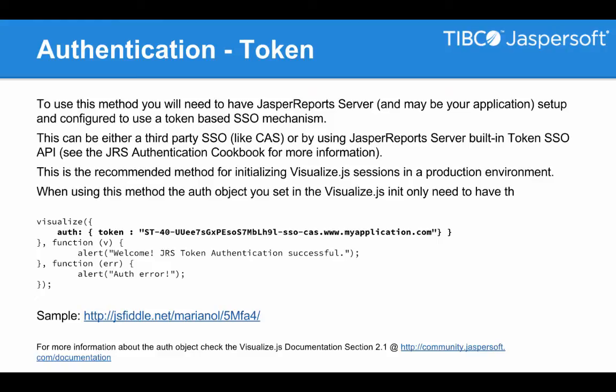Now let's look a little deeper into the token authentication method. In this method, as discussed, you will be using a single sign-on mechanism — either a third-party SSO or the Jasper Report Server built-in token SSO API. I would recommend checking the Jasper Report Server Authentication Cookbook in our documentation, which covers all the methods for third-party and internal APIs for authentication. This is the recommended method for embedding the library in a production environment. It's very secure and you are not exposing user credentials inside your code or during any calls made to the server. Of course, Jasper Report Server has to be configured to understand the authentication method and manage what to do with that particular token.